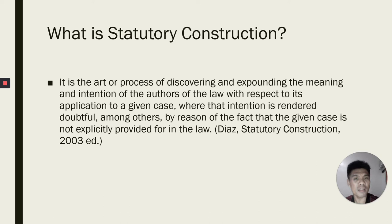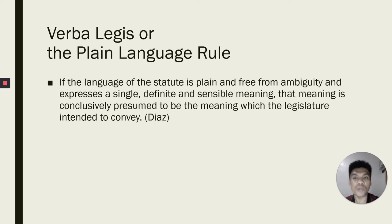So, what is the best, if not the most basic tool in interpreting statutes, laws, and other measures? Well, the rule is verba legis, or the plain language rule. Under this rule, if the language of the statute is plain and free from ambiguity and expresses a single, definite, and sensible meaning, that meaning is conclusively presumed to be the meaning which the legislature intended to convey.